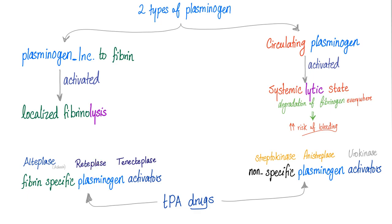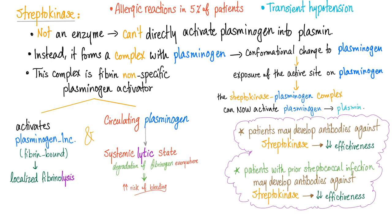If one class is more expensive for no reason, all hospitals would use the cheaper class. Think about it — this is why you need to study economics. Streptokinase: is it fibrin-specific or non-fibrin-specific? Non-fibrin-specific. So it's relatively less expensive than fibrin-specific drugs but has more side effects.